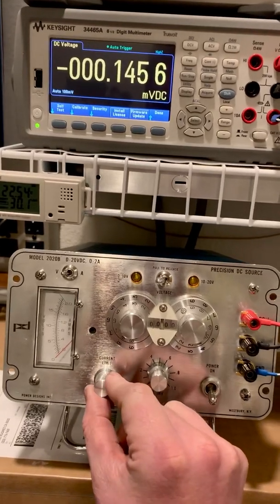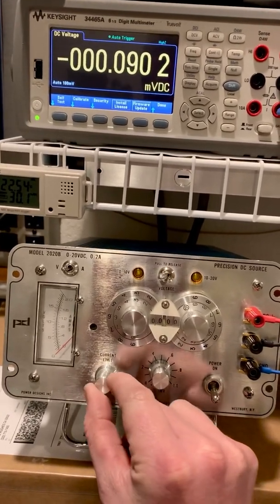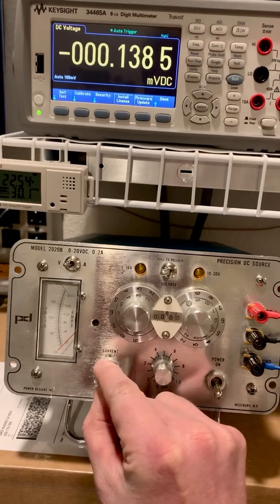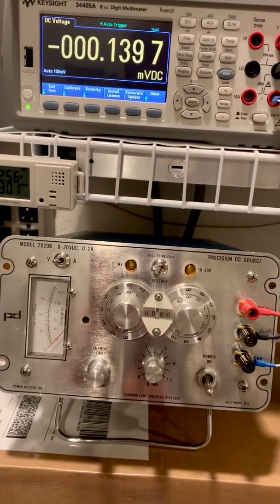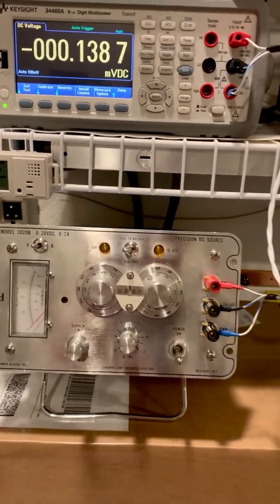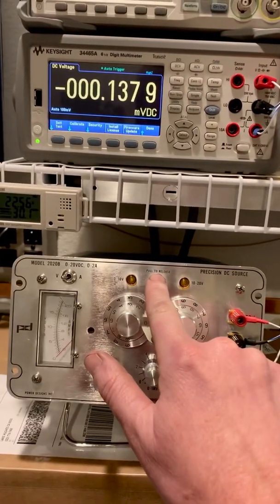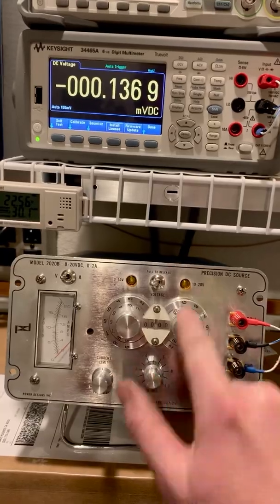Current limit, pulled out to set, adjustable from 0 milliamps up to 2 amps. We have a switch here for a 0 to 10 volt range, and then 10 to 20 volt range.